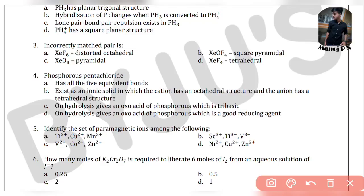Next question about phosphorus pentachloride: does it have all 5 equivalent bonds? No. Does it exist as an ionic solid where the cation has octahedral structure and anion has tetrahedral structure? No. On hydrolysis, does it give an oxo acid of phosphorus which is tribasic? Yes. On hydrolysis, does it give an oxo acid of phosphorus which is a good reducing agent? Yes.